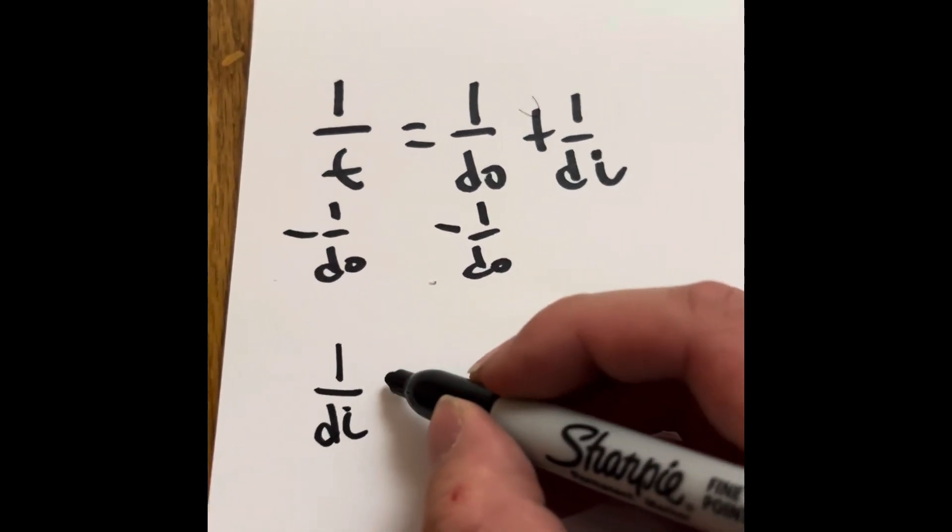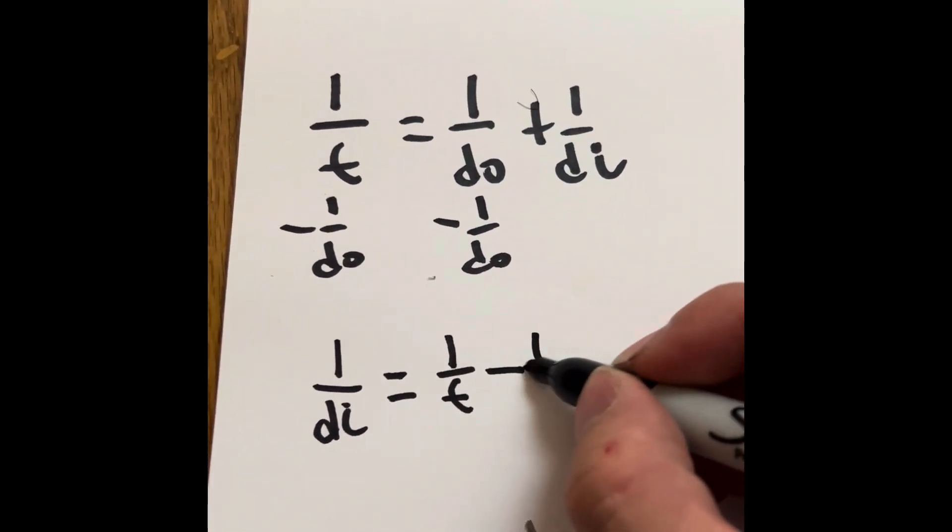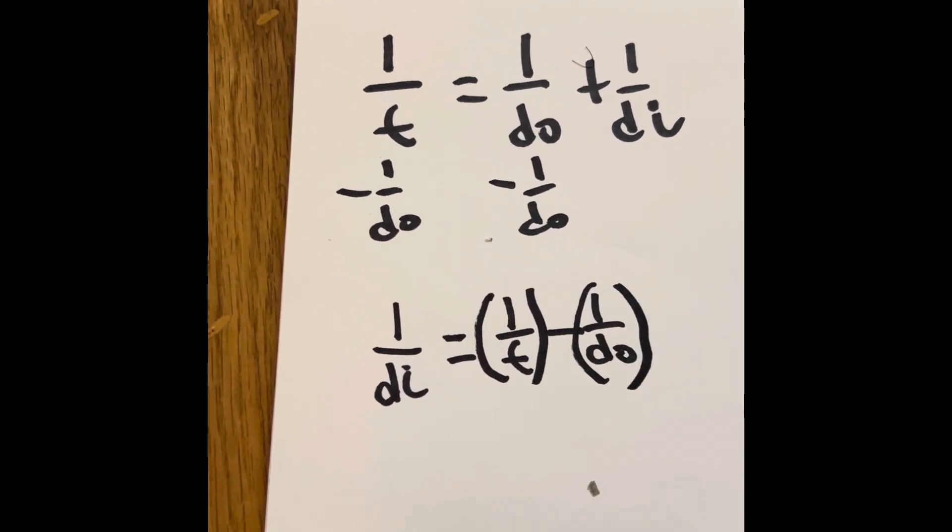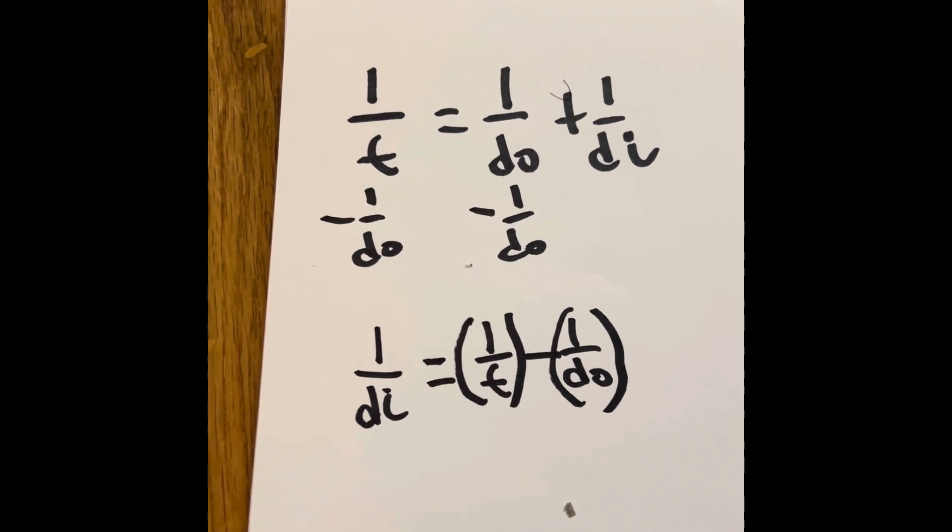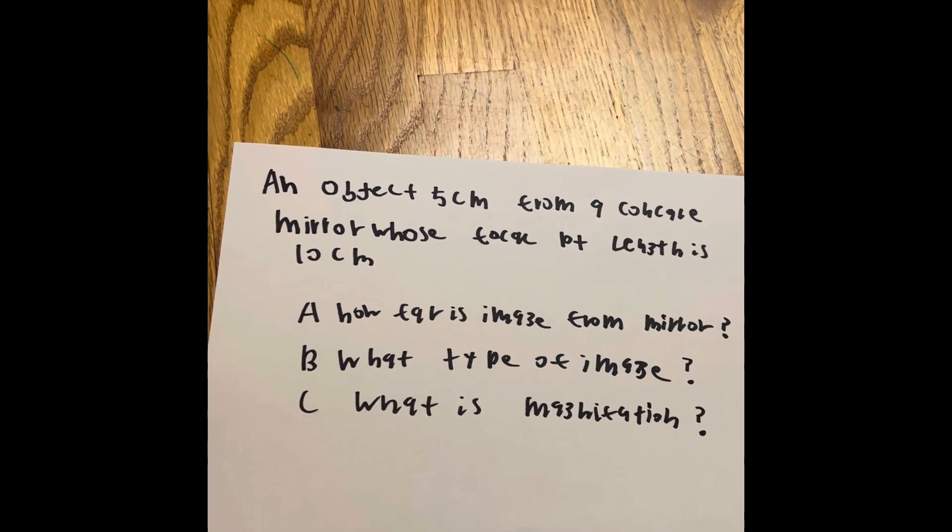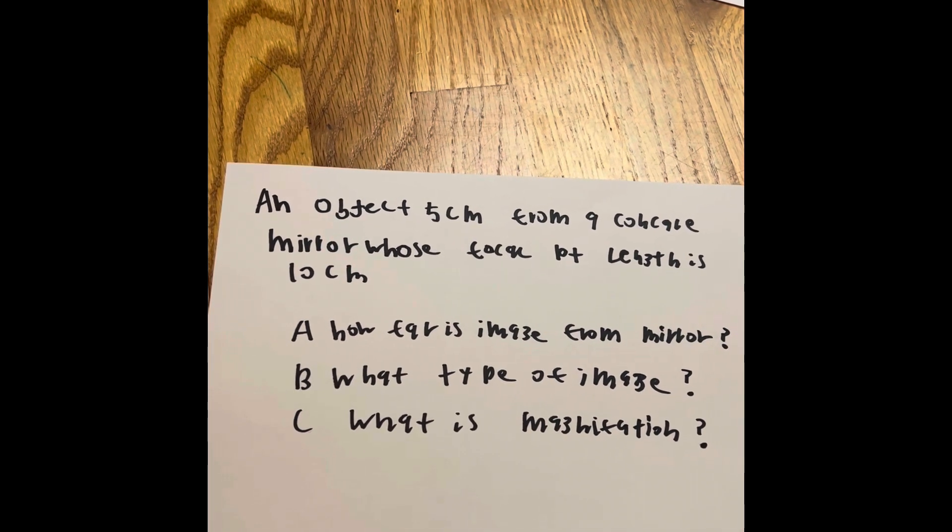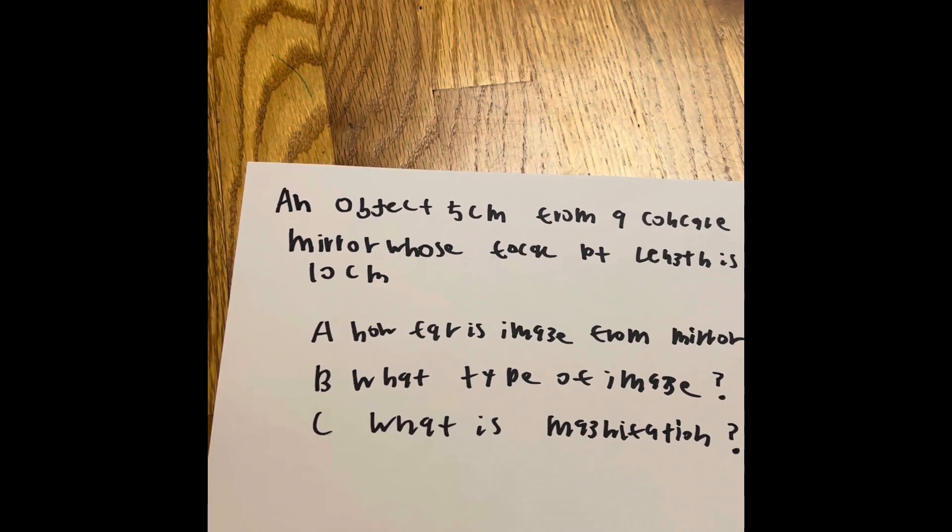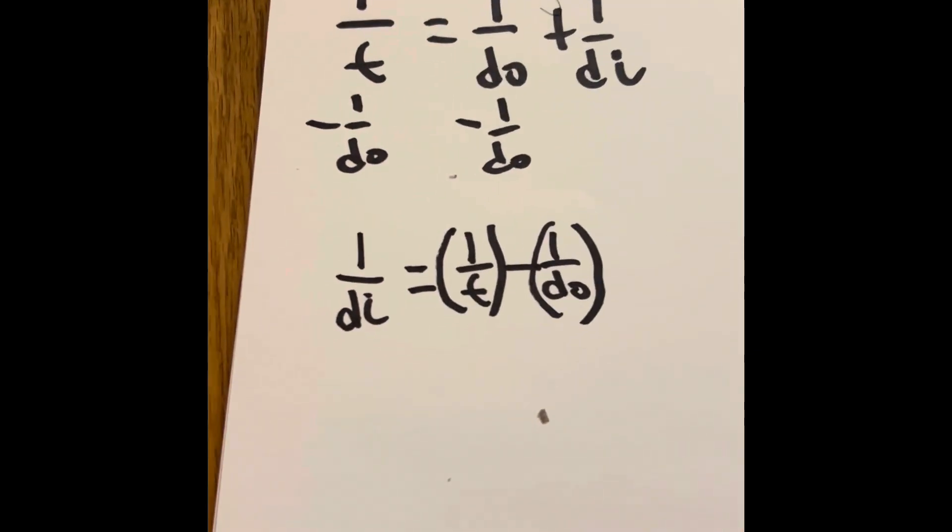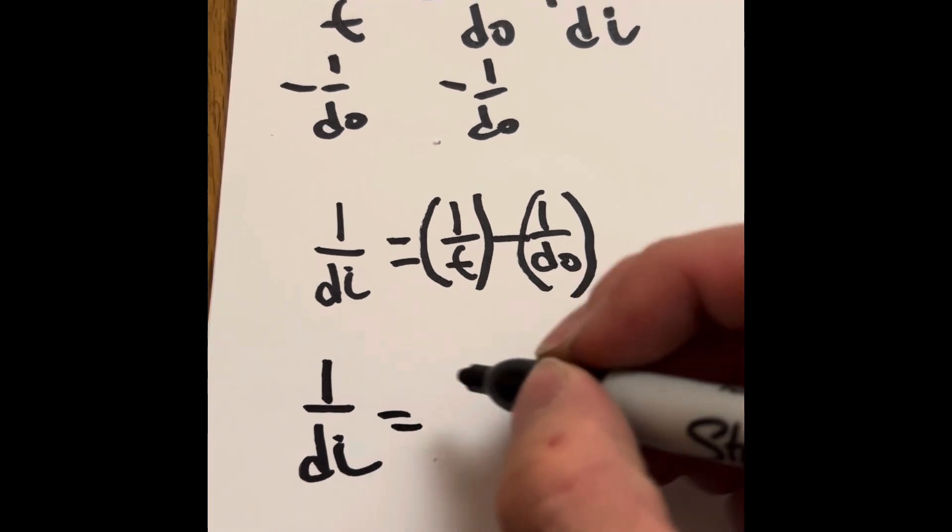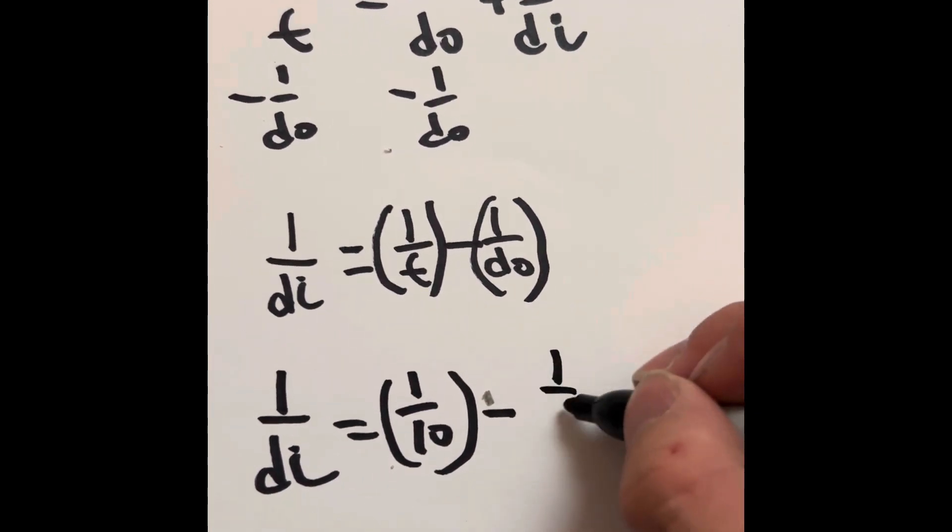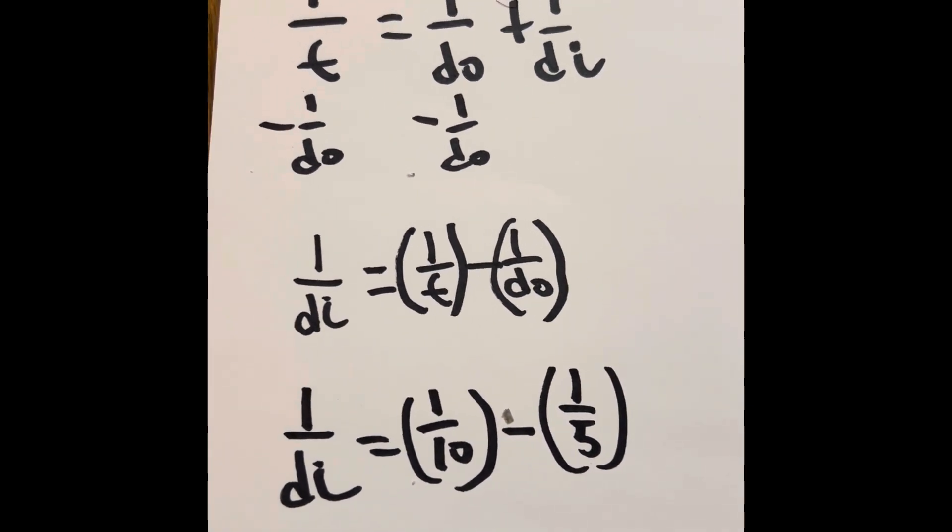Your 1 divided by di is going to be equal to 1 divided by f subtract by 1 divided by do. But how are you going to do it on a calculator? If you put parentheses over your fractions, the calculator will understand what kind of equation it will be. According to this scenario, an object is 5 centimeters from a concave mirror, whose focal point length is 10 centimeters. So we're going to do 1 divided by di is going to equal, the focal point is 1 over 10 in parentheses, minus that by 1 over 5 in parentheses.